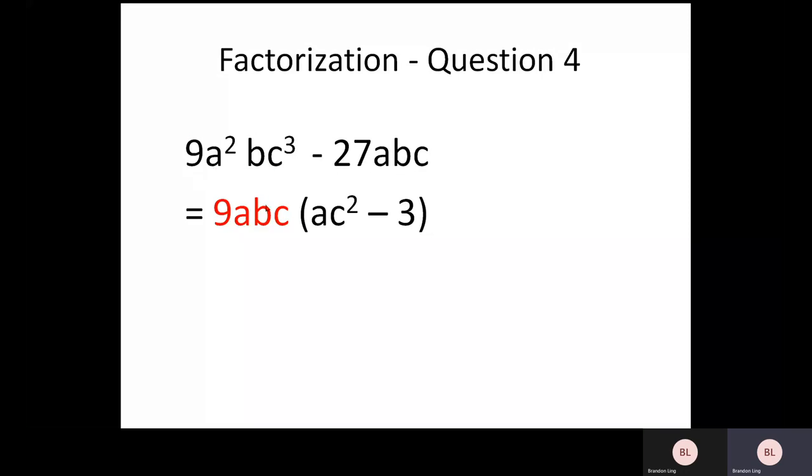So when you pull out A, B, C, essentially, this only becomes a C squared. And when you pull out A, B, and C out from the second term, it becomes only a 3 here.